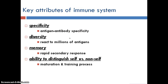Our immune system is so awesome because not only is it very specific — making custom antibodies for all the different antigens we'll be exposed to in our lifetime — but it's also very diverse in that it can respond to all those antigens. It has memory to remember when you encounter that same antigen again so it's almost instantly destroyed. And it's really good at telling what shouldn't be in our body and what should. That was a look at our body's specific defenses — I hope that was helpful.